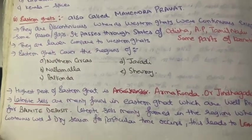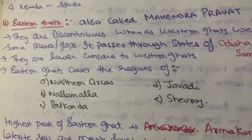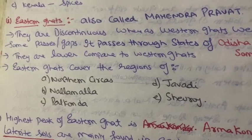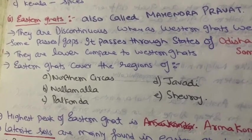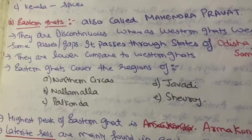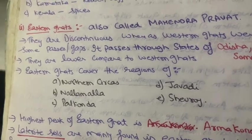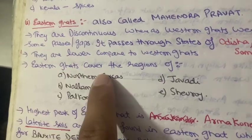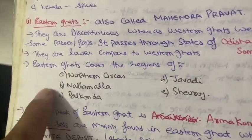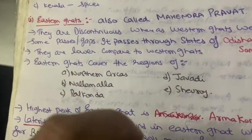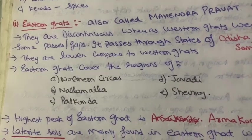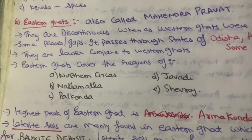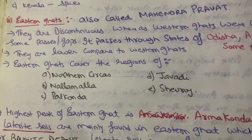Next point: Eastern Ghats are lower compared to Western Ghats. The peaks of Eastern Ghats are comparatively lower in height than those of the Western Ghats — this is a super important point. If someone asks you the difference between Eastern and Western Ghats, you can note that the peaks are lower. Eastern Ghats cover the regions of North Sirkas, Nallamala, Palkonda, Jawadi, and Chevrolet — these five are very important for exams.